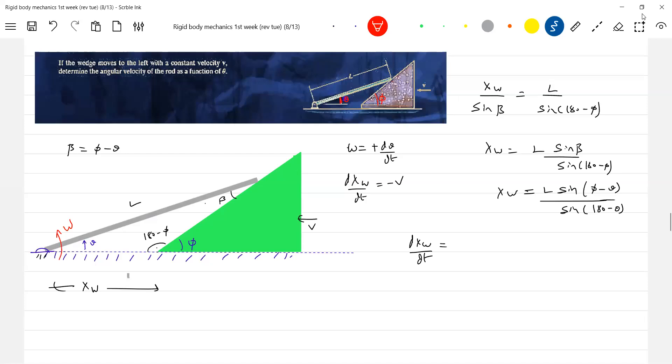Okay great, this will be... then this will differentiate. l sine of 180 minus phi will be sine phi.